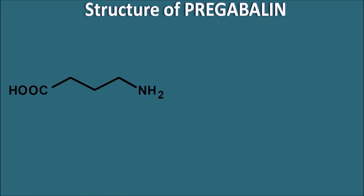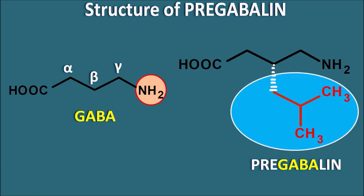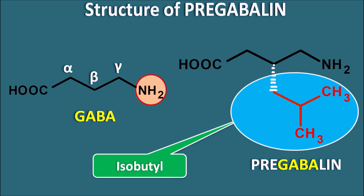Let us see the structure of GABA first. GABA is a butyric acid with alpha, beta, and gamma positions. At the gamma position there is an amino group, so this is gamma-aminobutyric acid, commonly known as GABA. Now the structure of pregabalin — its straight chain is similar to GABA, so pregabalin is a derivative of GABA. It has an isobutyl side chain attached at the beta position to GABA, making pregabalin the isobutyl derivative of GABA.